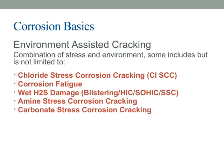Let's look at the concept of environment-assisted cracking. This occurs when there's a combination of stress and environmental factors that contribute to material failure. It's important to understand that this isn't just about mechanical stress alone, but how certain environments can accelerate cracking. For example, chloride stress corrosion cracking (CLSCC) is a common issue in environments with high chloride concentrations, like seawater or de-icing salts — it causes cracks to form and propagate along the material, often with little warning. Corrosion fatigue is another key point, where cyclic stresses combined with corrosive environments lead to faster crack growth than would occur with stress alone.